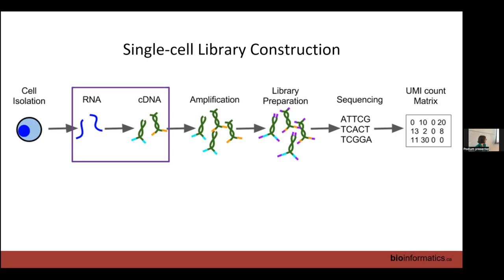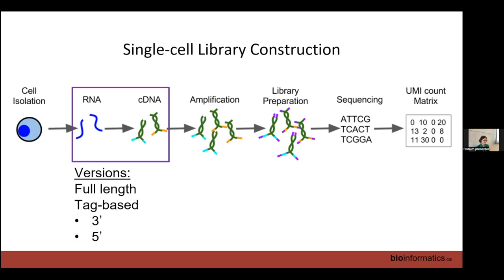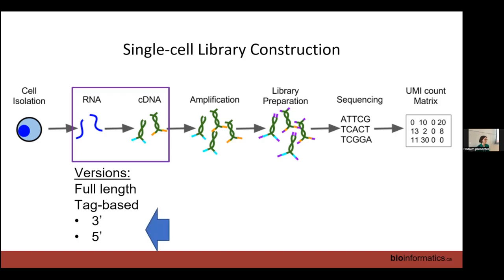There are different ways of turning RNA into DNA. You can do full-length RNA single cell RNA-seq or tag-based. I'm not going to talk about full-length because quantification for that is essentially the same as bulk RNA-seq. For single cell RNA-seq, almost all of you will be using tag-based methods, which are significantly different from bulk RNA-seq — that's what I'm going to talk about.